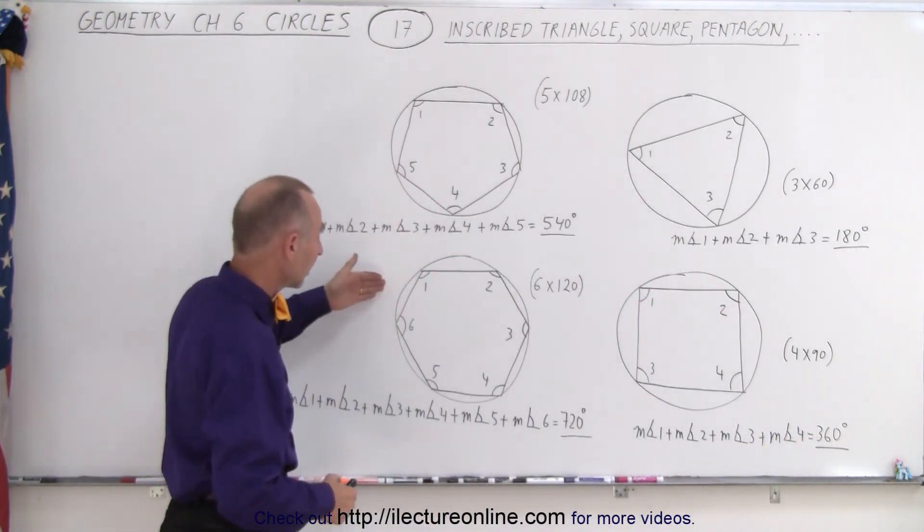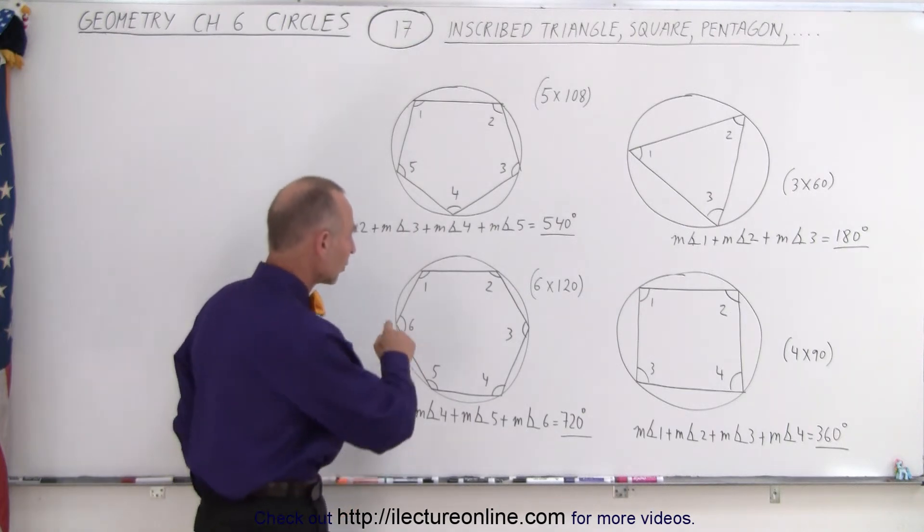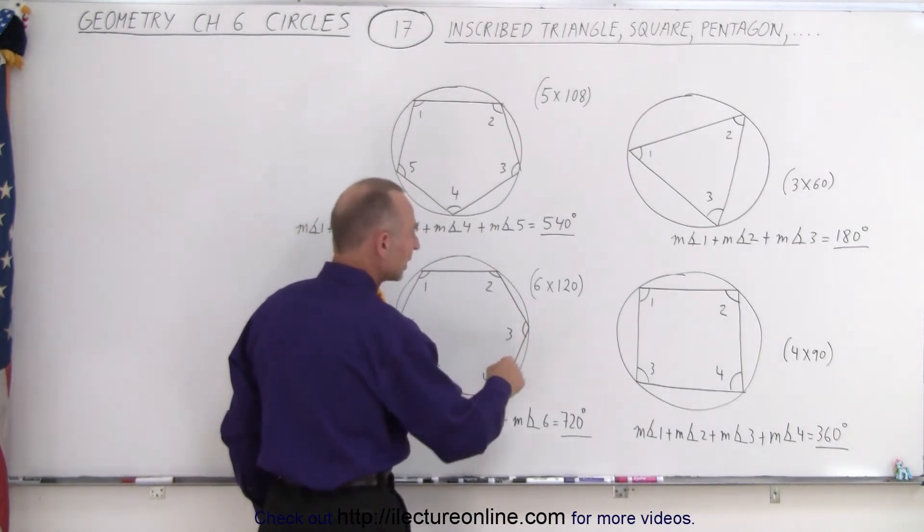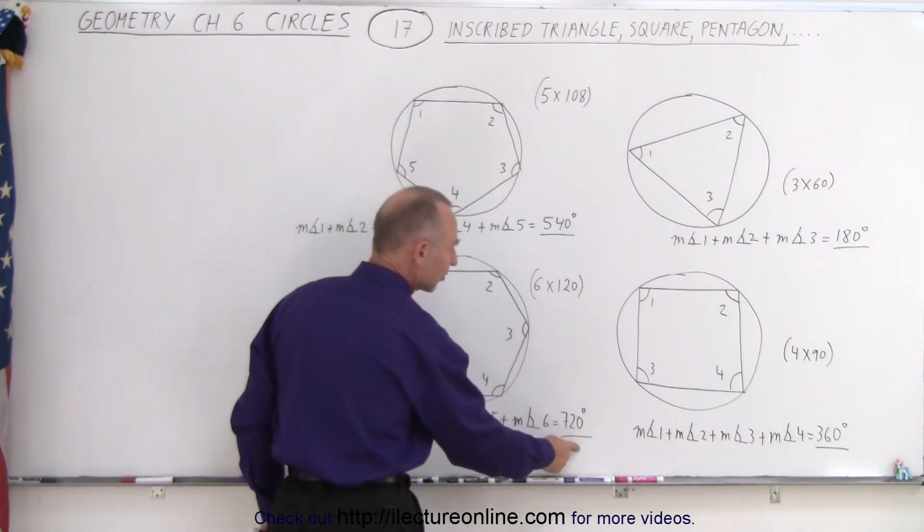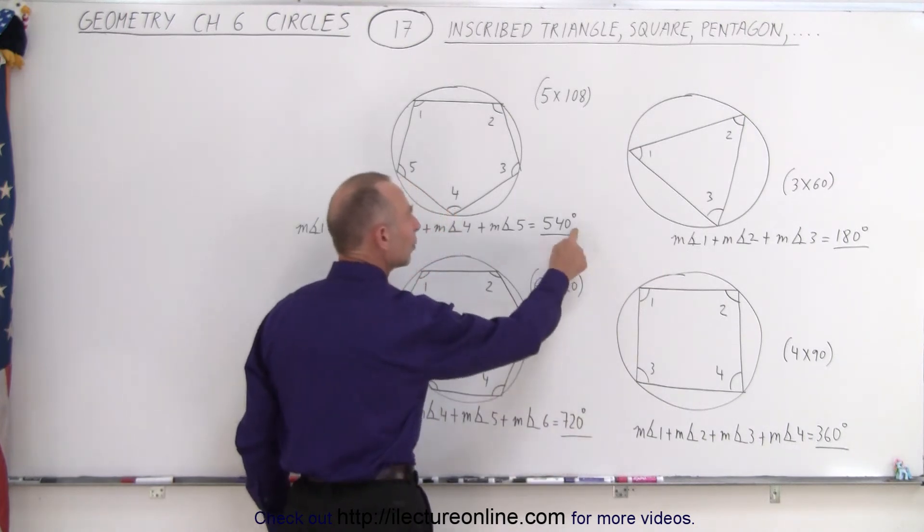And if we go to a hexagon, then notice there is six angles, they average 120 degrees each, times 6 is 720 degrees, again that's 180 degrees more than what we had over here.